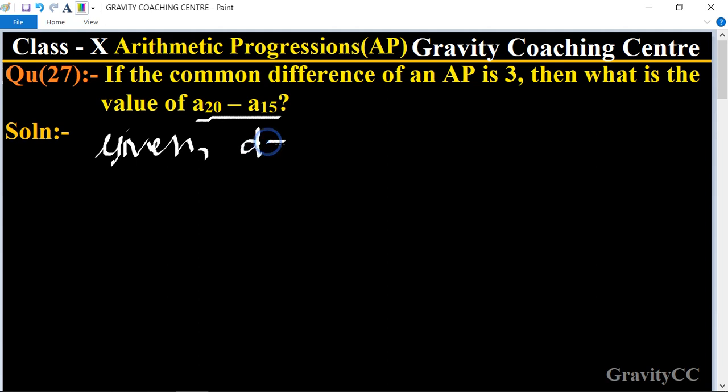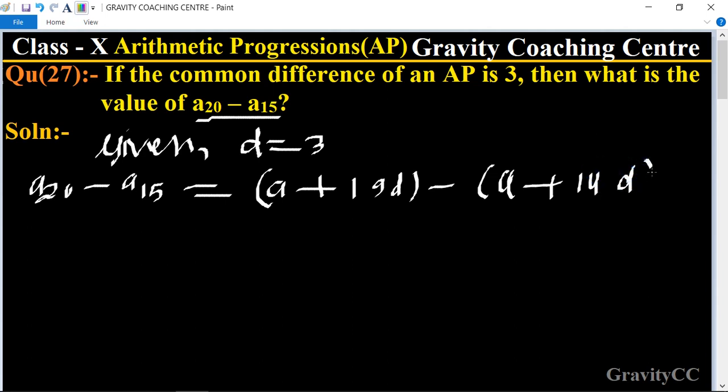Given: common difference d is 3. Find the value of a20 minus a15. So a20 means a plus 19d, and a15 means a plus 14d. Therefore, a20 minus a15 equals a plus 19d minus a plus 14d.